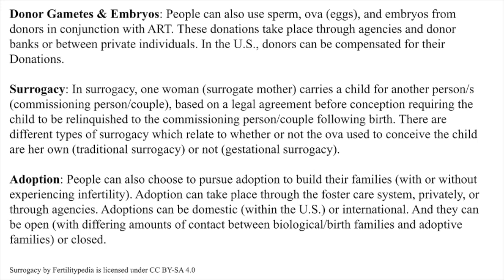Surrogacy: one woman, a surrogate mother, carries the child for another person or persons (commissioning person or couple), based on a legal agreement before conception requiring the child to be relinquished to the commissioning person or couple following birth. There are different types of surrogacy which relate to whether or not the ova used to conceive the child are her own — traditional surrogacy — or not — gestational surrogacy. Adoption: people can also choose to pursue adoption to build their families, with or without experiencing infertility. Adoption can take place through the foster care system, privately, or through agencies. Adoptions can be domestic, within the U.S., or international, and they can be open, with differing amounts of contact between biological and adoptive families, or closed.